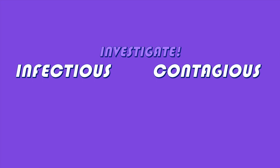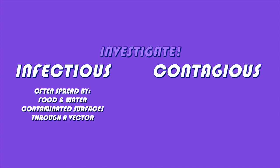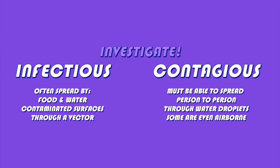Infectious simply means that a pathogen can be spread. They are often spread by food and water, contaminated surfaces like a railing or a door handle, or a vector, which are things like plants and animals. In order for a pathogen to be contagious, it must be able to spread from person to person.